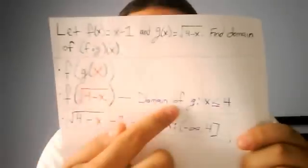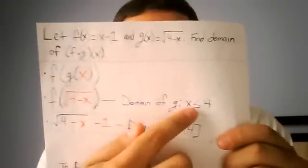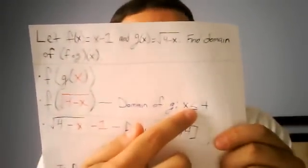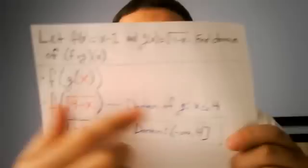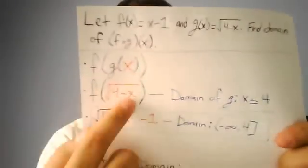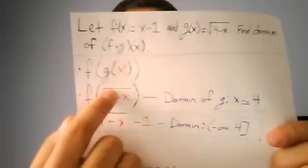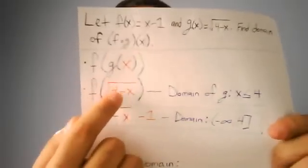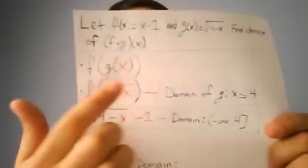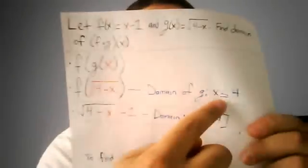And the domain of g would be x less than or equal to 4. This is because if you plug in anything more than 4 here, this whole number inside would be negative, and you can't have a negative under the square root. So that's why you have this here.